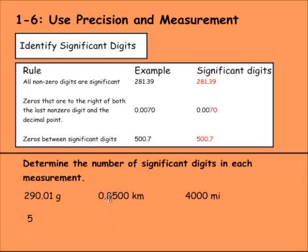Here we have 0.8500. So the eight and five are automatically significant. These two are going to be significant because of this rule. They're to the right of the decimal and the last significant digit. This one's not because it's to the left of the decimal. And there's no significant digits over to the left. So this one will have four significant digits.